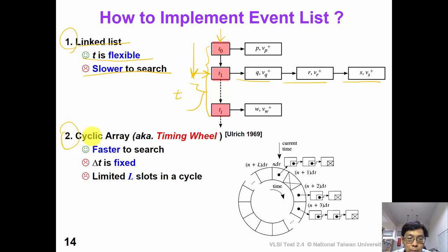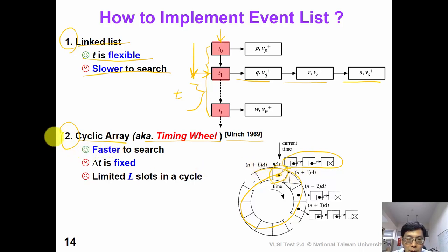The second implementation is a cyclic array, also known as the timing wheel invented by Aldridge in 1969. In this timing wheel, it's a circle of array where each time slot represents a timestamp, and we have a linked list of events associated with each timestamp. This data structure is faster than the linked list approach. However, the problem is that because we have a fixed number of slots, we cannot insert an arbitrary time slot between two neighbors — we have a limited number of L slots in a cycle.